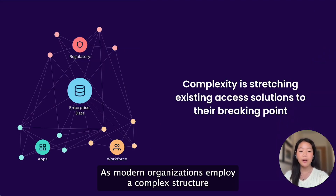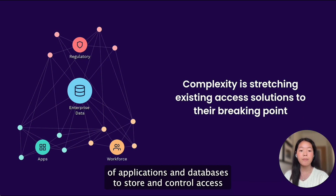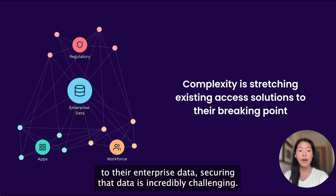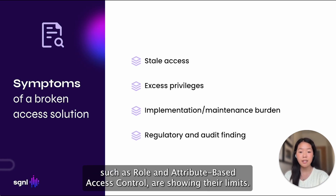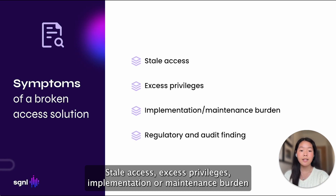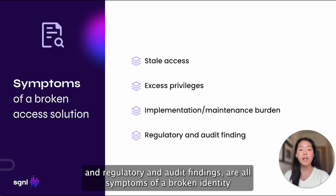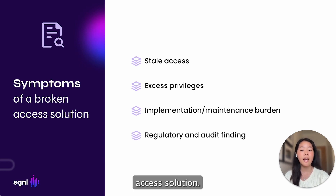As modern organizations employ a complex structure of applications and databases to store and control access to their enterprise data, securing that data is incredibly challenging. Consequently, traditional approaches to enterprise access management, such as role and attribute-based access control, are showing their limits. Stale access, access privileges, implementation or maintenance burden, and regulatory and audit findings are all symptoms of a broken identity access solution.